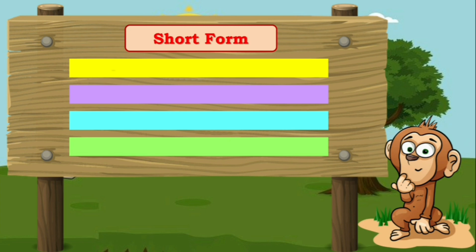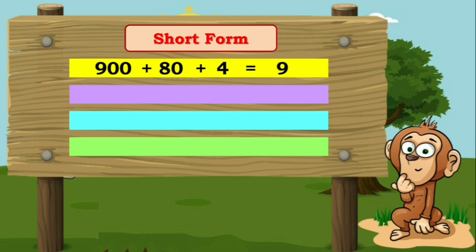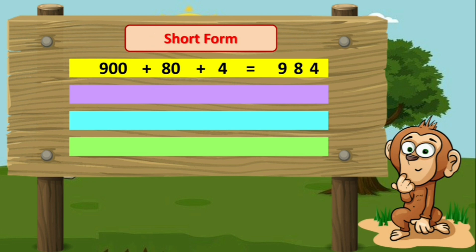Here we have 900 + 80 + 4, and we have to write its short form. How many hundreds do we have here? Nine hundred — so we will write nine. After nine hundreds, we have eight tens, so we will write eight after nine. And then we have four ones, so we will write four after eight. We got the short form: nine hundred and eighty-four (984).